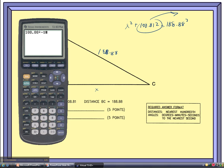So I'm going to put in the calculator 188.88 squared, subtract out 108... Yep, it's got a little bit of a lag here. 108.81 squared. And then take the square root of that number.